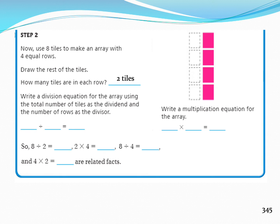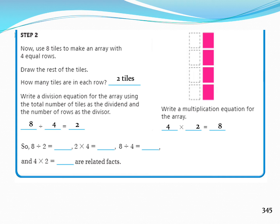Write a division equation for the array using the total number of tiles as the dividend. What is the total number of tiles? 8. And the number of rows as the divisor — 4 rows. 8 divided by 4 equals 2. Now write a multiplication equation: 4 multiplied by 2 equals 8. So our four related facts are: 8 divided by 2 equals 4, 2 multiplied by 4 equals 8, 8 divided by 4 equals 2, and 4 multiplied by 2 equals 8.